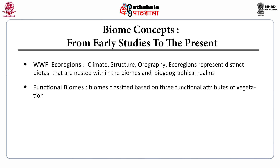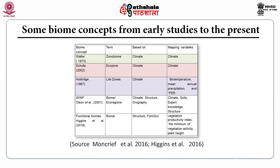The functional biomes are classified based on three functional attributes of vegetation. In this table, the biome concepts have been explained from early studies to the present. The Walters biome concept is known as zonobiome and is based on climate. Scholl's biome concept is the ecozone, also based on climate. Holdridge uses the term life zones, again with climate as the basis. The WWF recognizes biomes and ecoregions based on climate, structure and orography. The functional biomes of Higgins are based on structure and function.